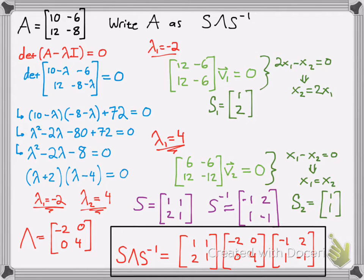So S lambda S inverse is equal to A. So if you multiply all this out, you could get your matrix. So I wanted to do a quick three-minute video. Here it is, and now here's my conclusion. So good luck, and happy studying, and keep practicing.